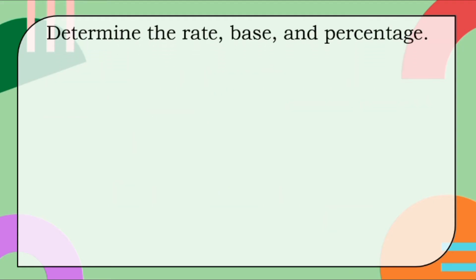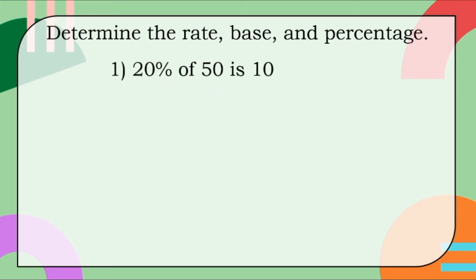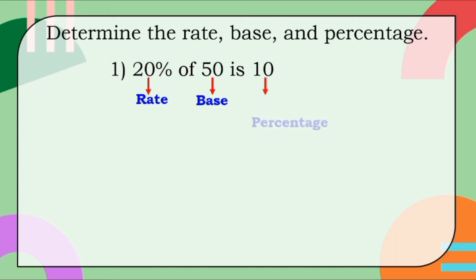Determine the rate, base, and percentage. Number one: 20% of 50 is 10. 20% is the rate because it has a percent sign. 50 is the base because of the word 'of' before 50. 10 is the percentage because of the word 'is' before the number 10.